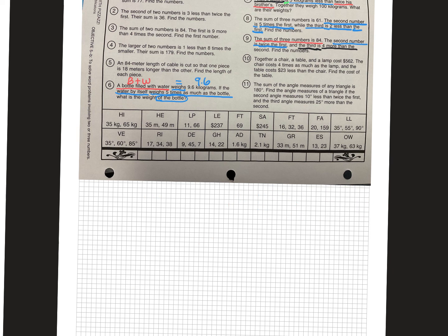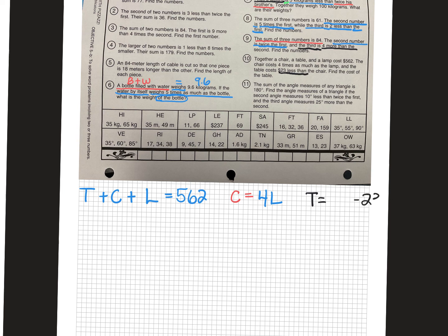Number 10. Together a chair, a table, and a lamp cost $562. I'm going to use the letters T, C, and L — table plus chair plus lamp equals $562. The chair costs 4 times as much as the lamp — so C equals 4L. And the table costs $23 less than the chair — so T equals C minus 23.